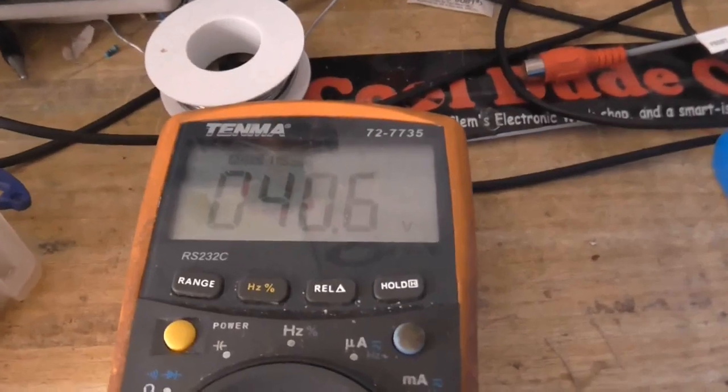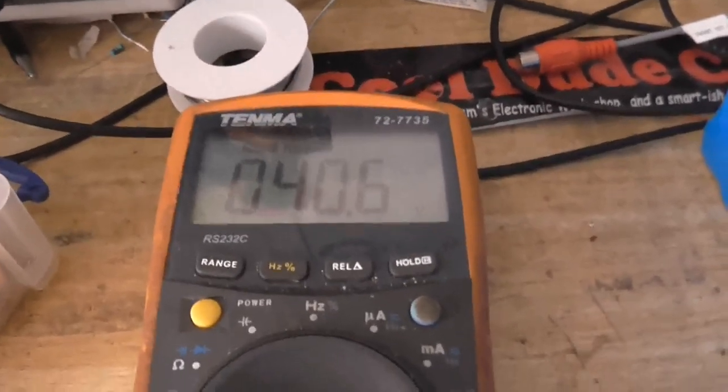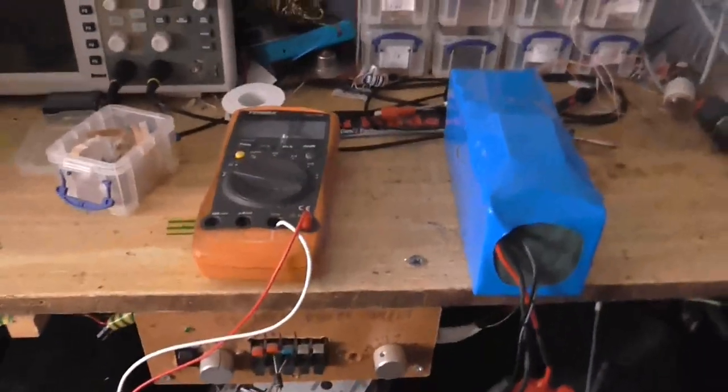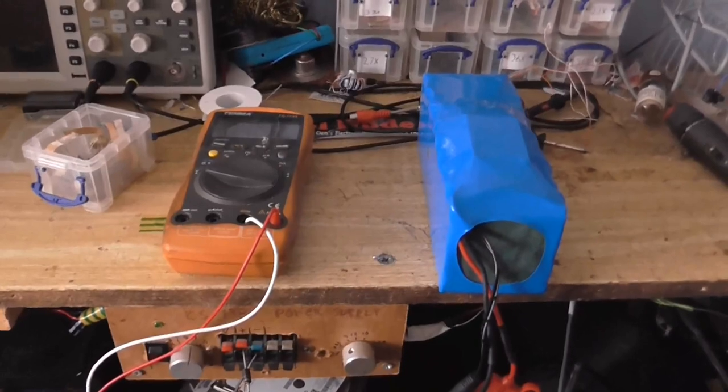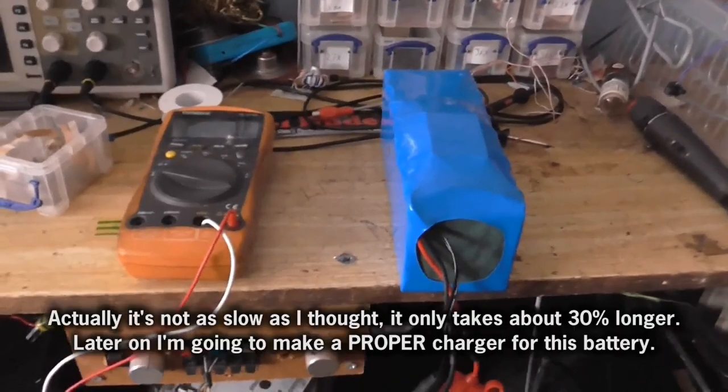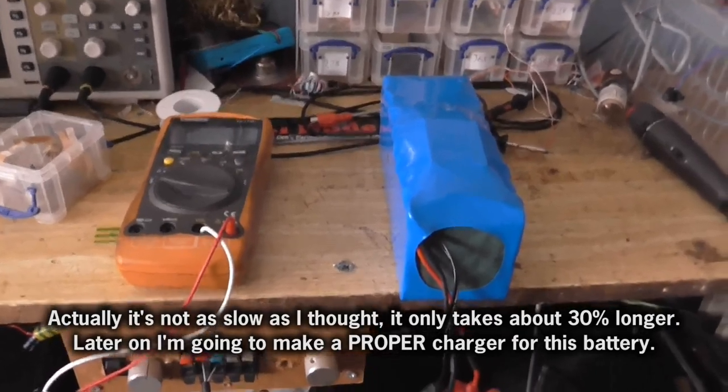Also, I'm measuring the voltage across the battery on my multimeter, and when this gets to about 42 volts, I'll know the battery's charged. It's a lot slower than using the designated charger for this battery, but in maybe a decade or two, this battery will be fully charged.